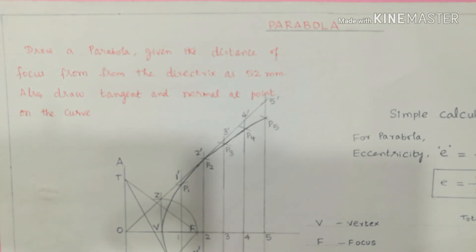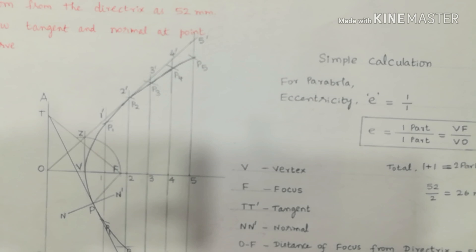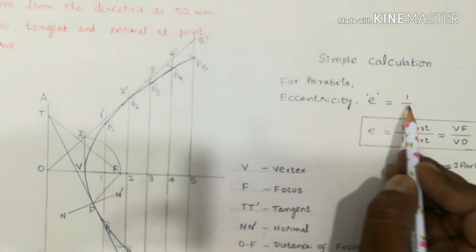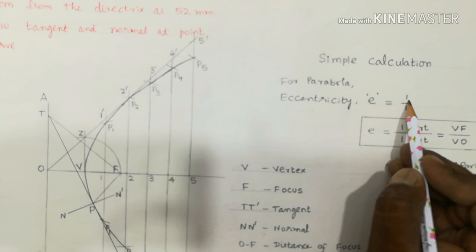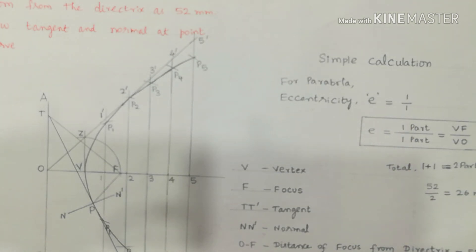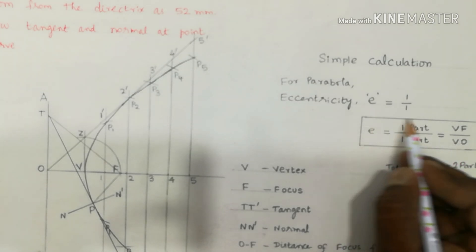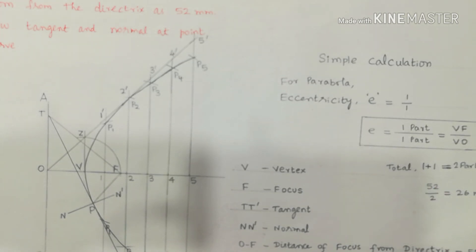For a parabola, the usual procedure is followed — same as for ellipse and hyperbola, with only the curve being different. The eccentricity value for a parabola is 1. So the fraction is 1 by 1, meaning E equals 1 part by 1 part. This ratio VF to VO is the same. In a question paper, the eccentricity for a parabola is known to be 1, so we follow the standard procedure.